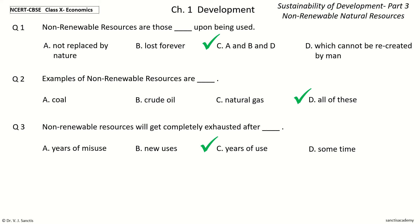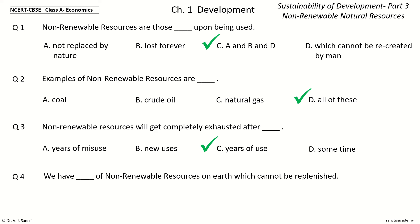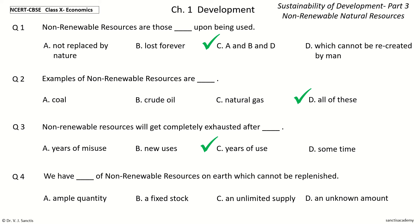Question four: We have — of non-renewable resources on earth which cannot be replenished. The options are ample quantity, a fixed stock, an unlimited supply, an unknown amount. The answer is a fixed stock: we have a fixed stock of non-renewable resources on earth which cannot be replenished.